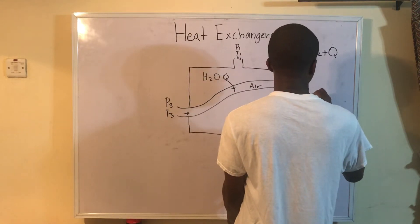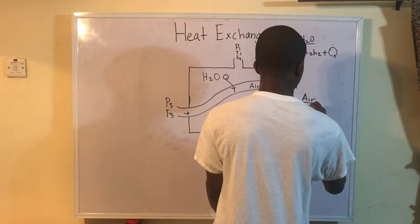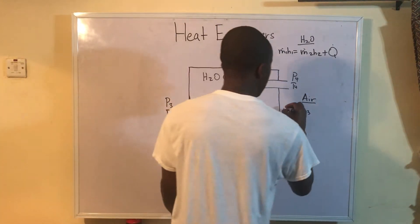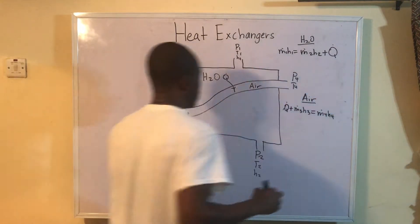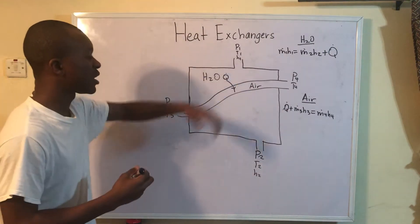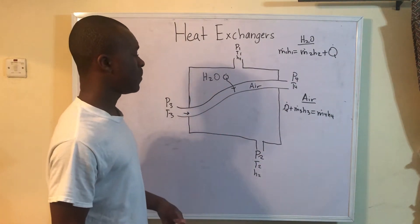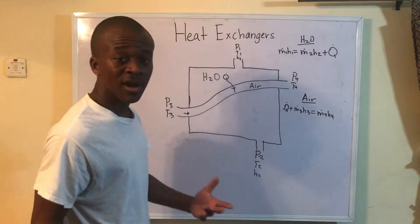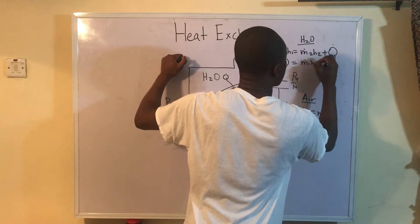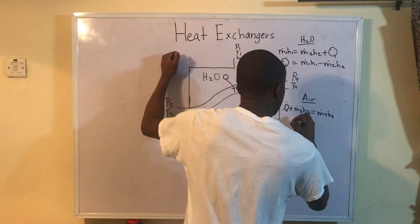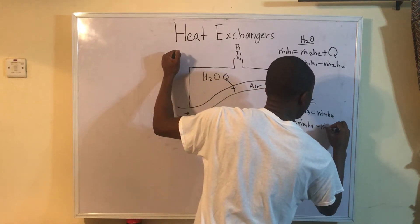Now looking at it from the perspective of the air, we have M dot 3 H3 coming in, and we also have Q dot coming into the air. So we have M dot 3 H3 plus Q dot equal to M dot 4 H4. M dot 3 H3 and Q dot are both coming in, and leaving we have M dot 4 H4.